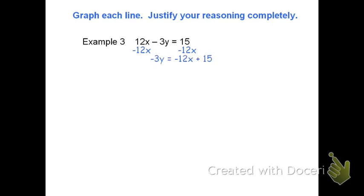I'm going to say it's negative 3y equals negative 12x plus 15. I tend to write the x before the constant because I want the form y equals mx plus b. The x should be before the constant.